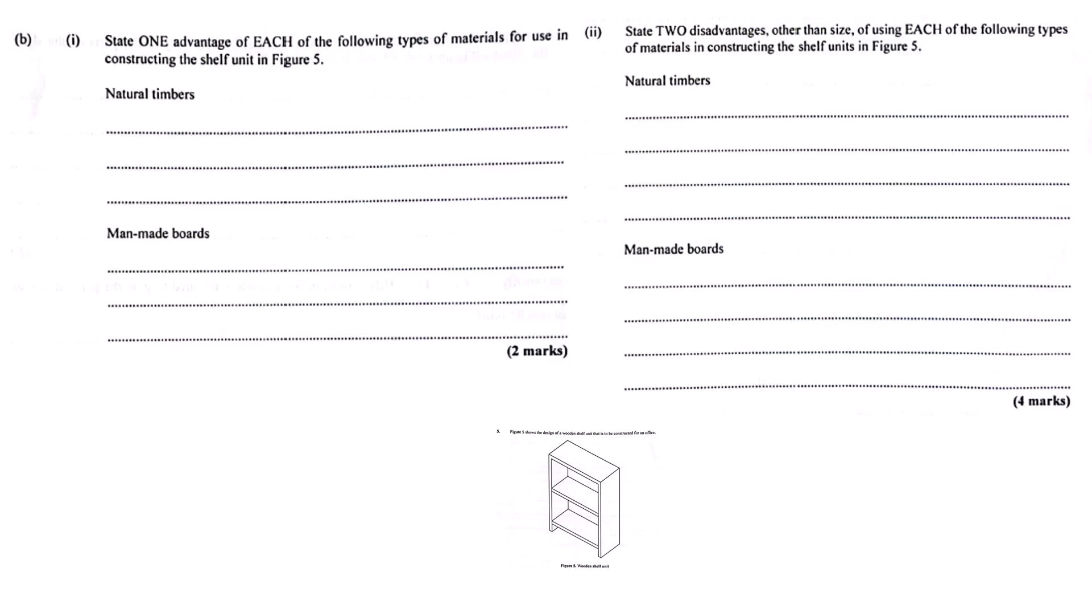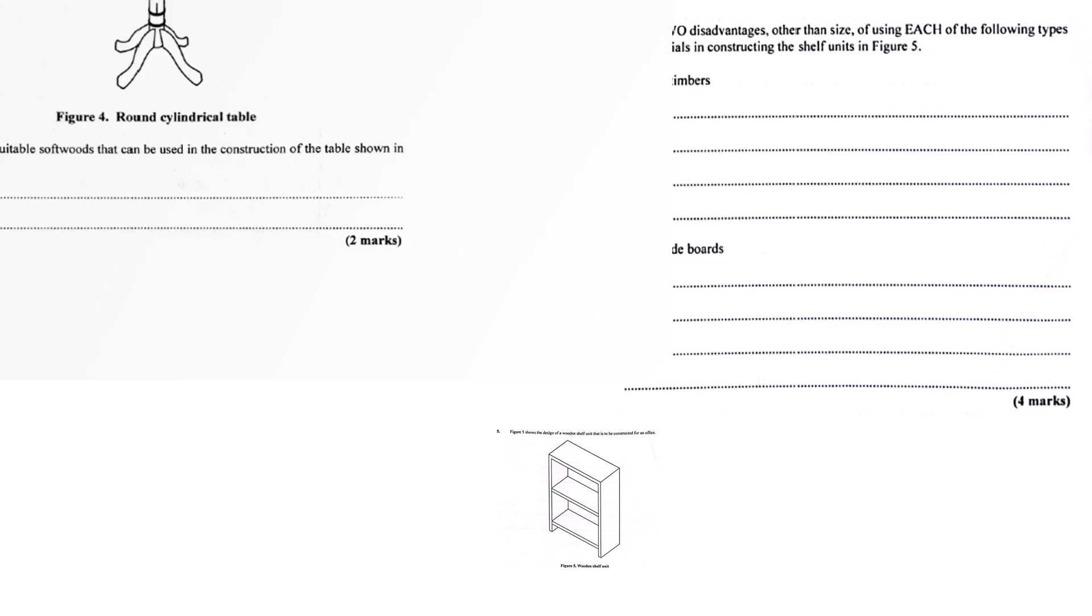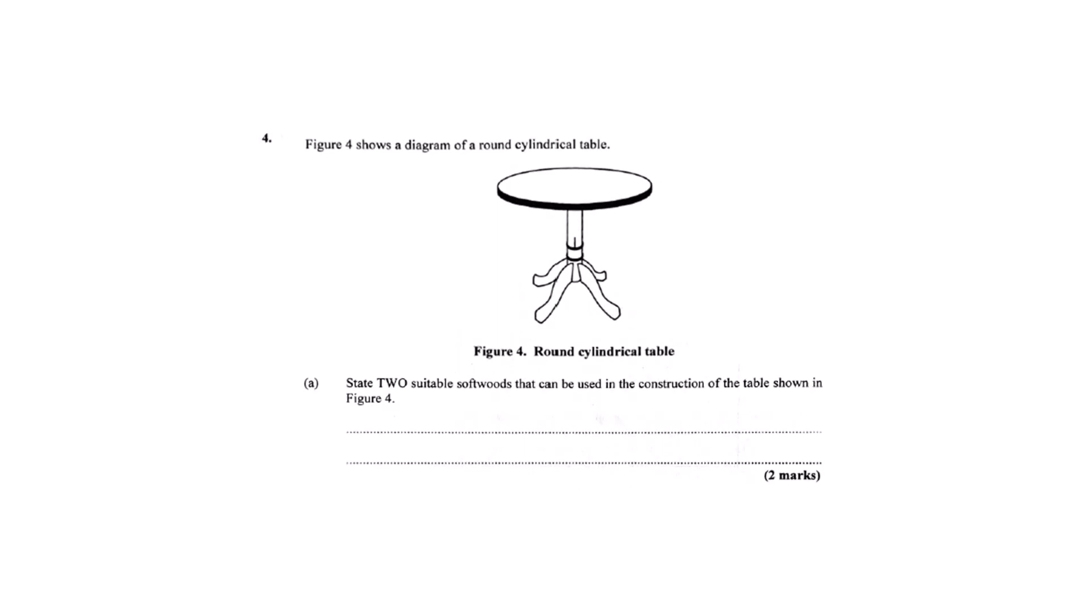What about a round table? Any particular woods good for that? For a round tabletop, especially if you want to shape the edge nicely, sometimes softwood works well because it's easier to carve or sand into smooth curves. Cedar or spruce could be options depending on the desired finish and use.